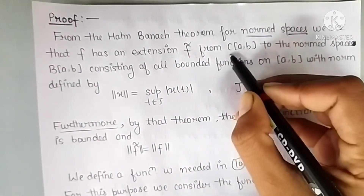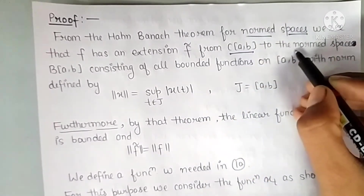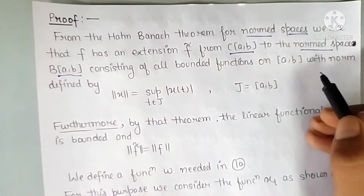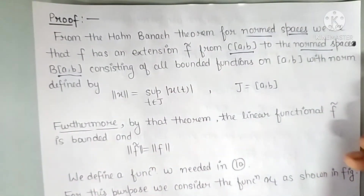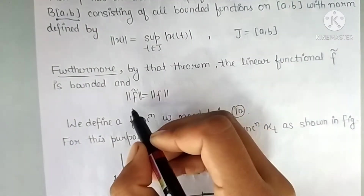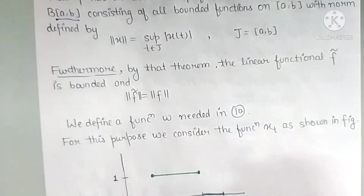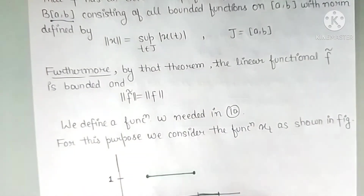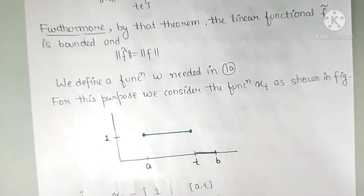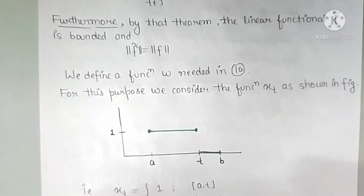In the proof, we first use the Hahn-Banach theorem for normed spaces. By that theorem, F has a linear extension F̃ from C[a,b] to B[a,b] (the space of all bounded functions with the sup norm), and the norm of F̃ equals the norm of F.